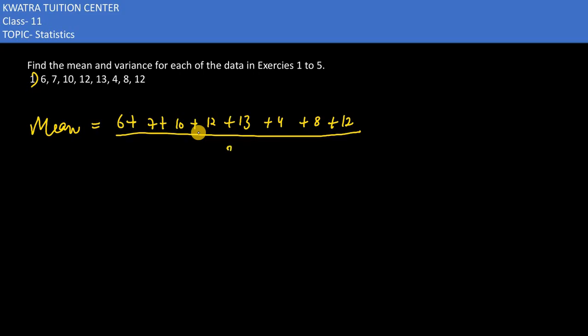Add up all these numbers and divide by the total number of observations, which is 8. The numerator is 72, so 72 divided by 8...